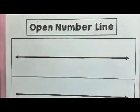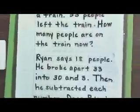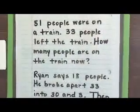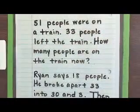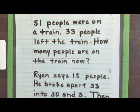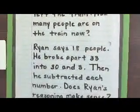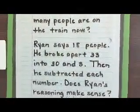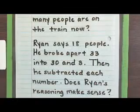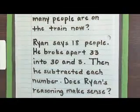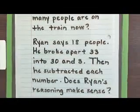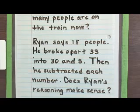So we're going to go ahead and look at another one. This one says: 51 people were on a train. 33 people left the train. How many people are on the train now? Ryan says 18 people. He broke apart 33 into 30 and 3, then he subtracted each number. Does Ryan's reasoning make sense?